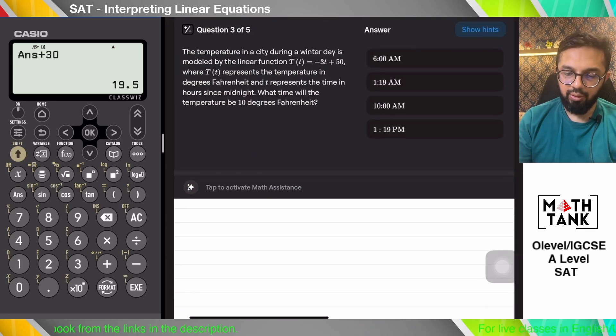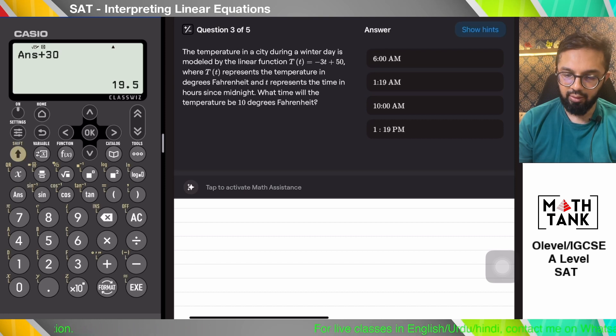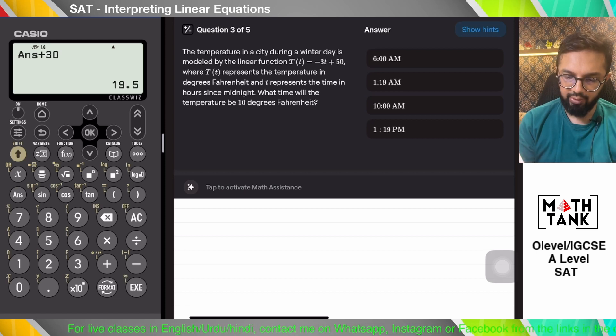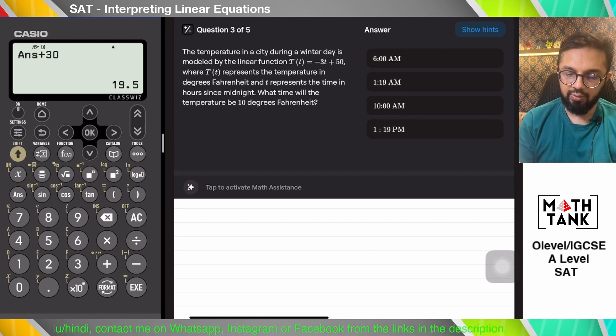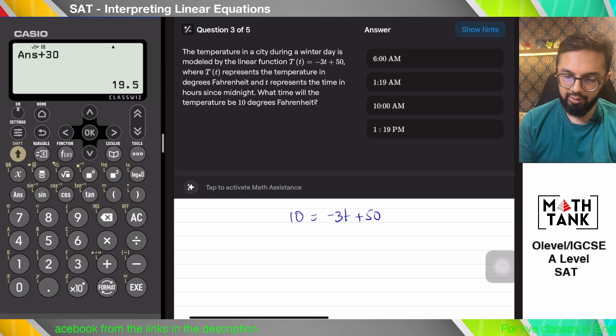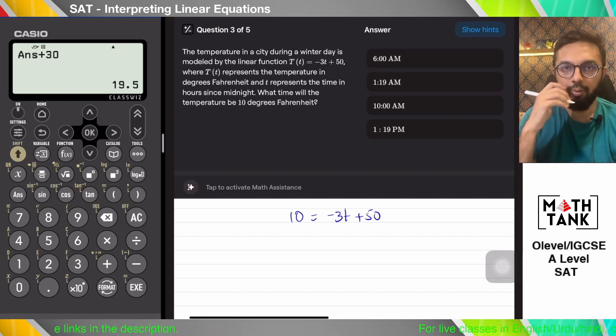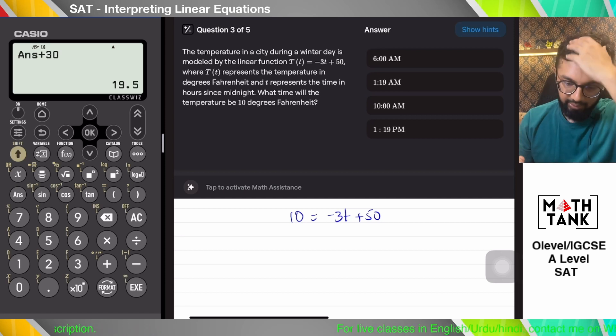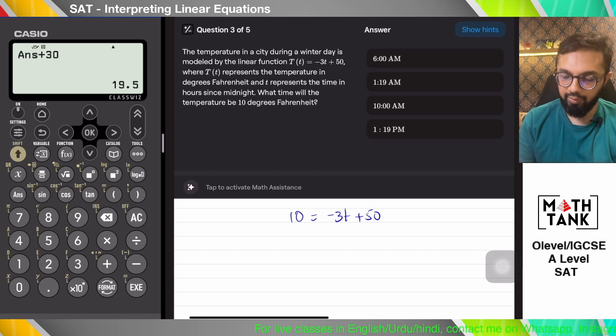The temperature in a city during a winter day is modeled by the linear equation, where T represents time. What time will the temperature be 10 degrees Fahrenheit? So when will it be 10 degrees Fahrenheit? 10 equals minus 3T plus 50. I'm assuming that the counting starts from zero, meaning it starts at night at 12 AM. So 10 minus 50...